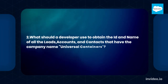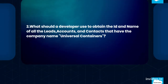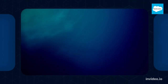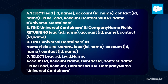Question 2: What should a developer use to obtain the ID and name of all the leads, accounts, and contacts that have the company name Universal Containers? A. SELECT lead id, name, account id, name, contact id, name FROM lead, account, contact WHERE name = 'Universal Containers'.